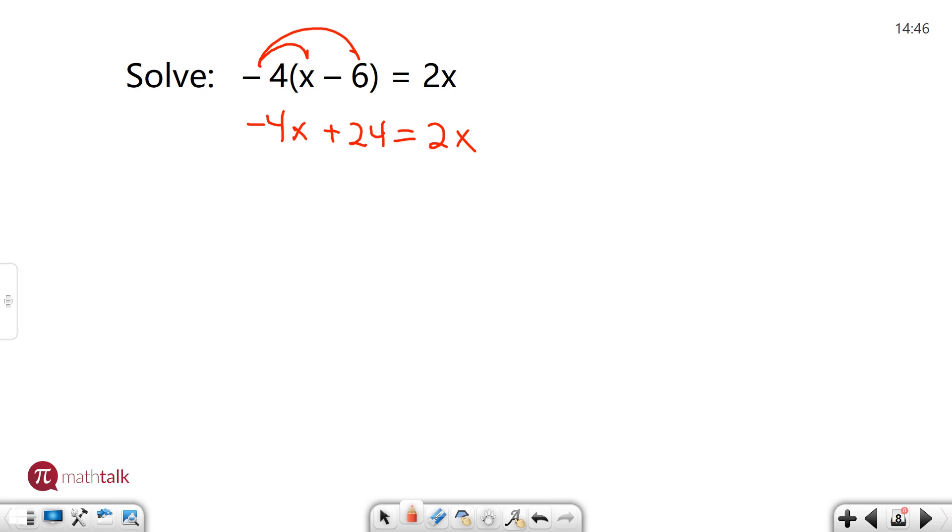Now what I have is an equation with an x on one side and x on the other. In the last example I brought all my x's to one side and my numbers to the other. So I'm going to bring this negative 4x over to the other side.